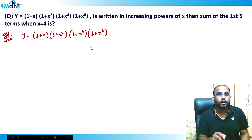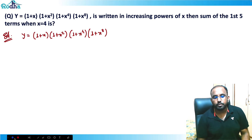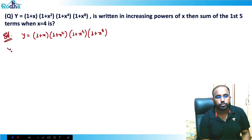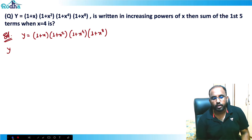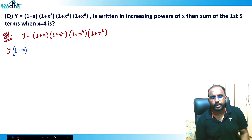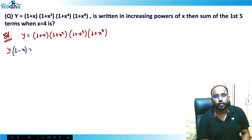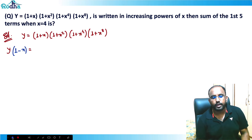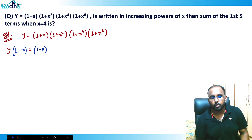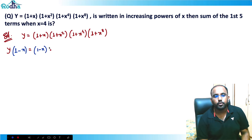There's one key trick to solve this kind of question, otherwise it becomes very complicated. What I'll do is multiply both sides by (1 - x), because all the terms on the right side have plus signs.